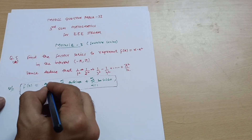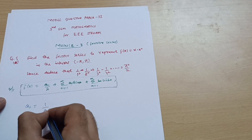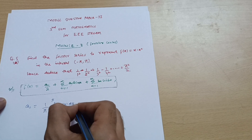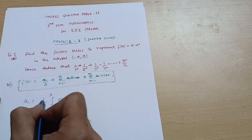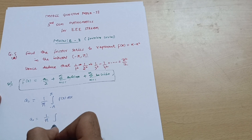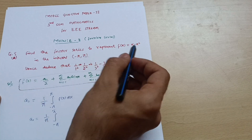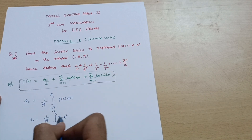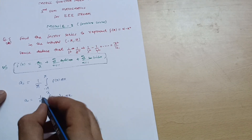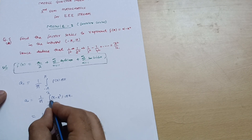First we calculate a₀. The formula is a₀ = (1/π) ∫₋π^π f(x) dx. Substituting f(x) = x − x², we get a₀ = (1/π) ∫₋π^π (x − x²) dx.